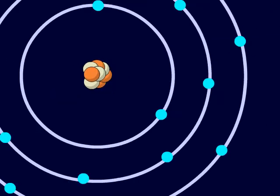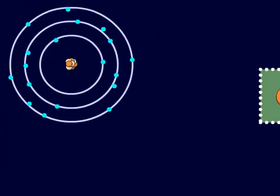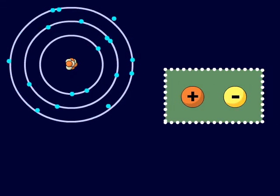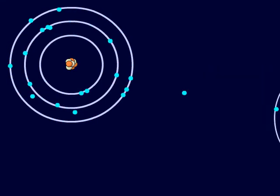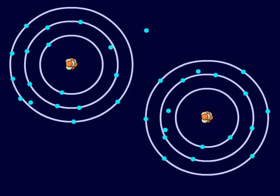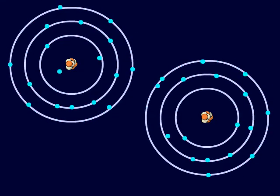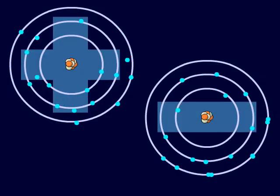Normally, the protons and electrons inside of an atom cancel each other out. But sometimes an atom will lose an electron or gain one, leaving it with a positive or negative charge.